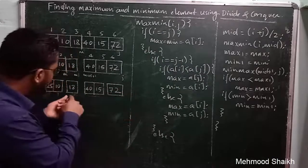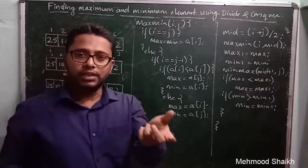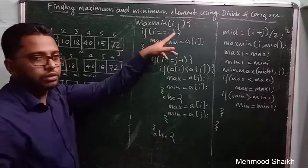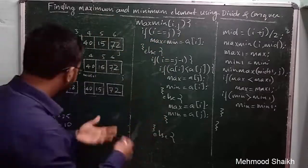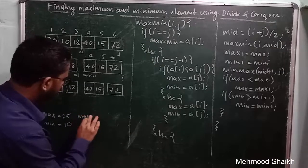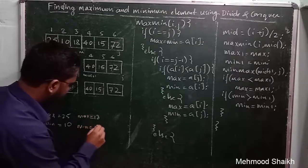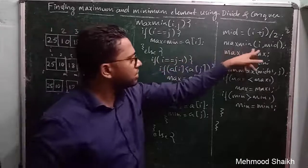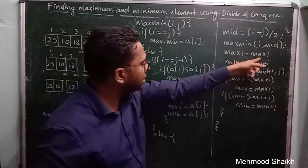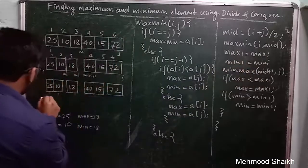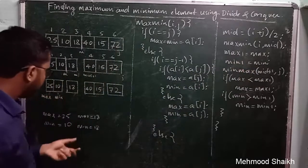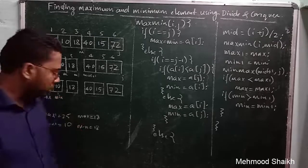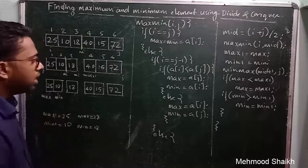For the right sub-problem with only one element (18), we directly set max = 18 and min = 18. After the recursive call on i to mid, we pass max to max1 and min to min1. So max1 = 25, min1 = 10, and we then proceed to find the maximum and minimum across the results.